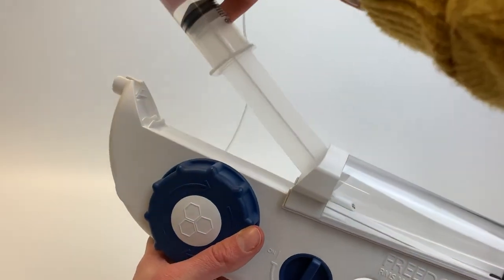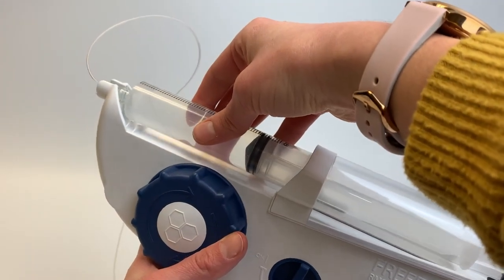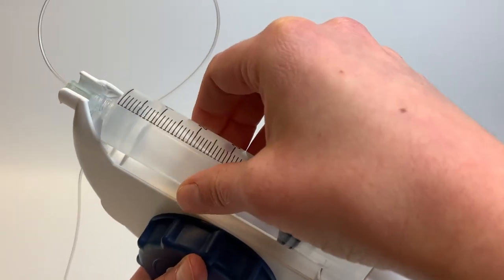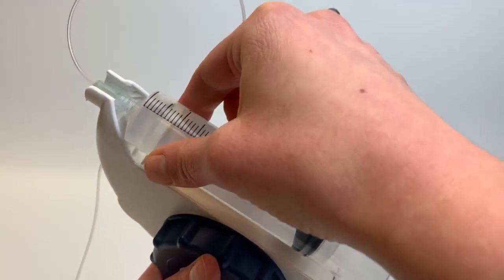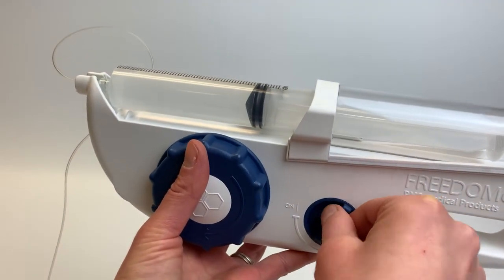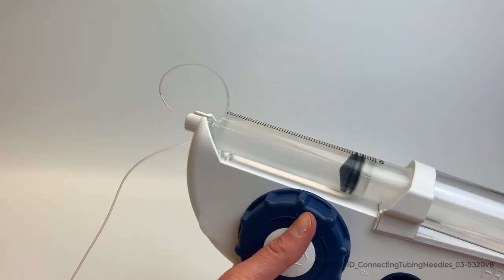If using the Freedom 60, note that if you accidentally connect the high flow needle set directly to the syringe without the precision tubing, the syringe will not stay in place and may eject from the syringe driver.